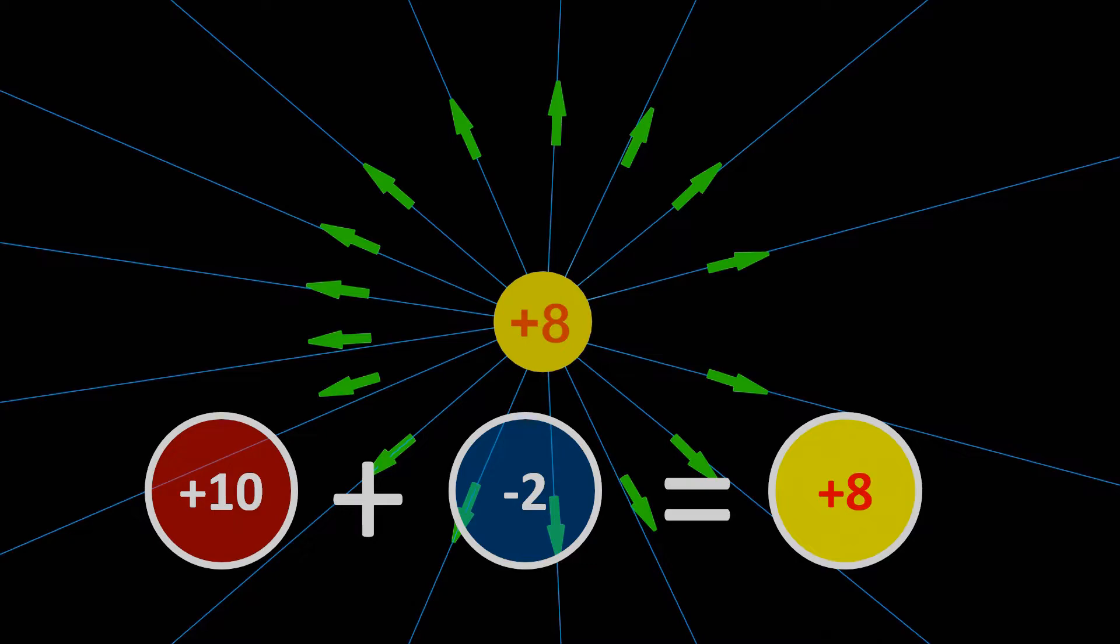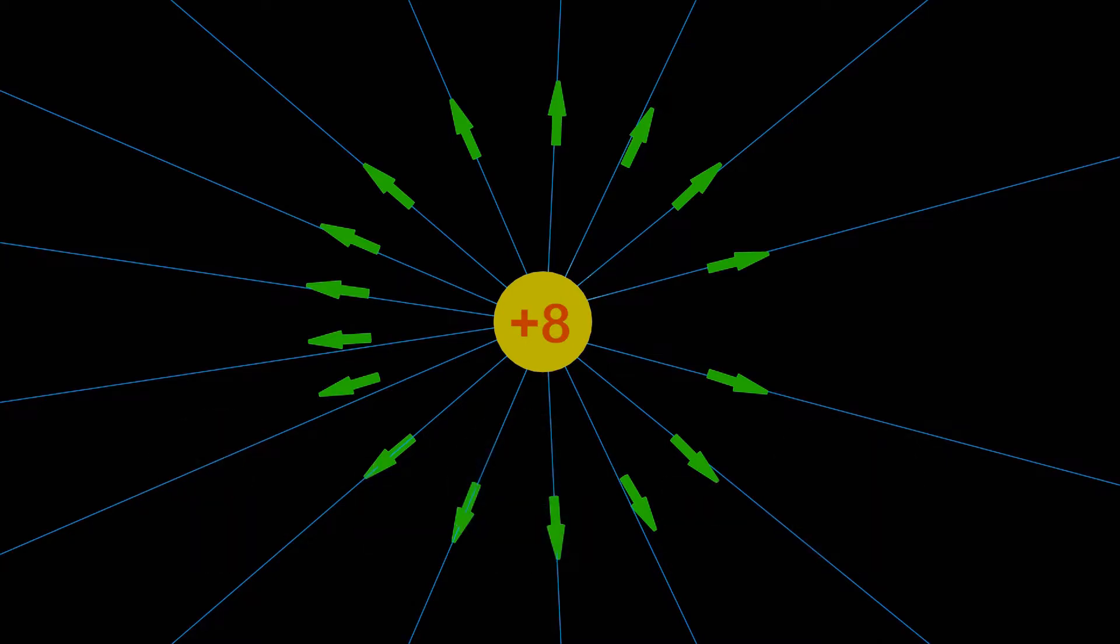It is approximate, because the distance between the two charges is not 0, which could affect the net electric field.